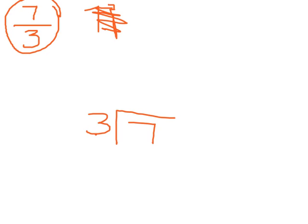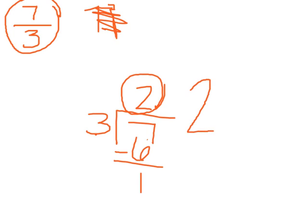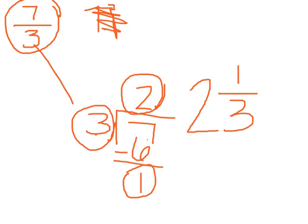3 fits into 7 two times, 2 times 3, which is 6, and 1 is left over. So this is going to be my big whole number. This is going to be my new numerator. And my denominator will just stay the same as it was. So 2 and 1/3.